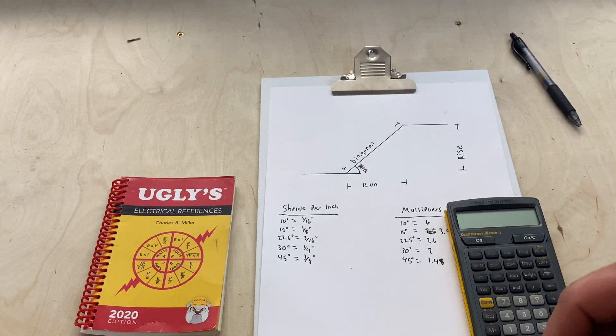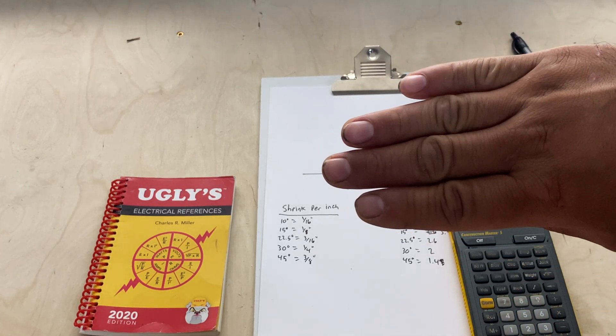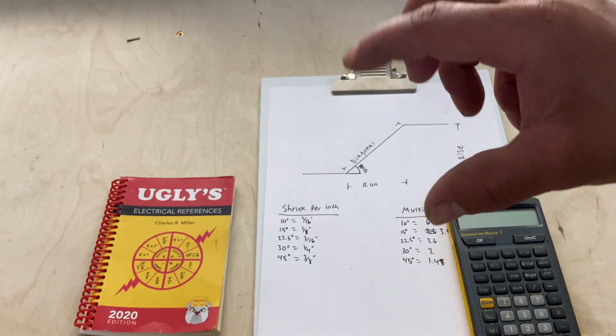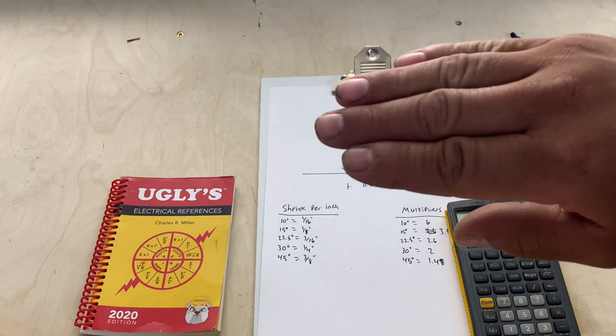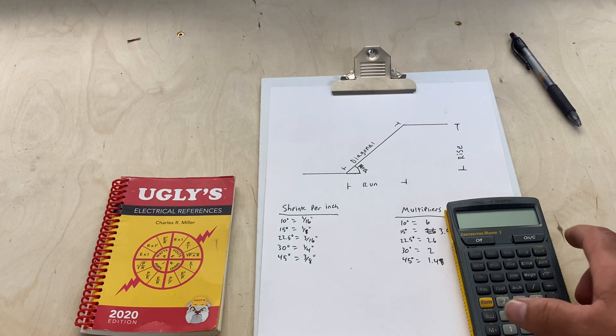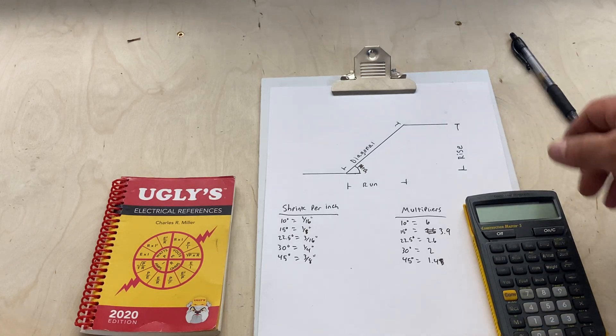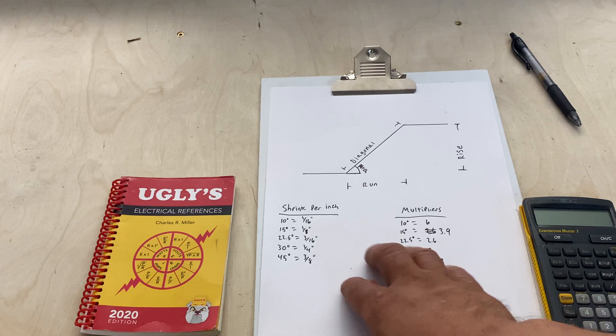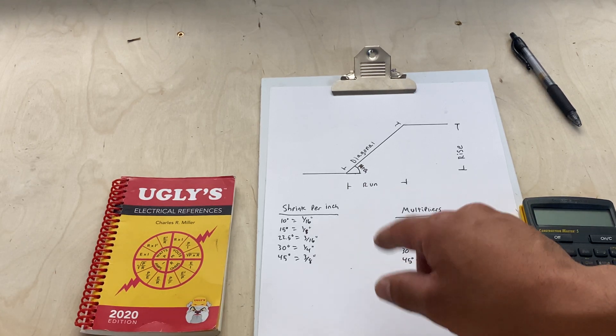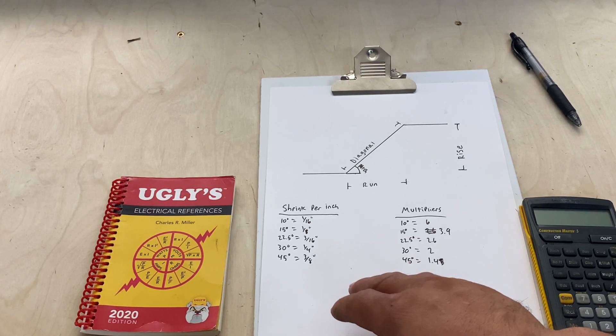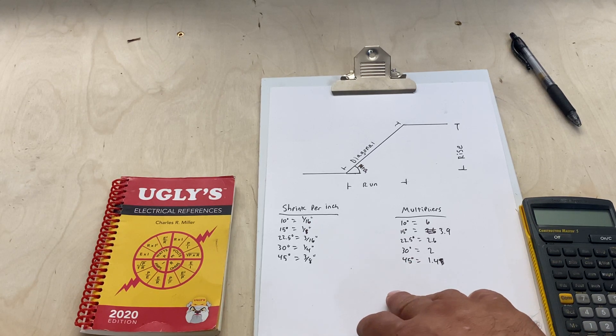For tubing, if you're off a sixteenth you'll see it because all the tubing is strapped together. Versus conduit, you have your spacing in between, so if you were off a sixteenth you'll see some light through there but it doesn't look as bad.